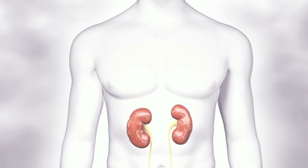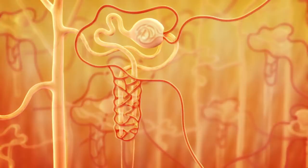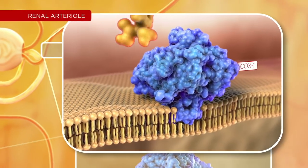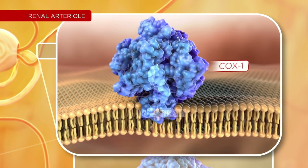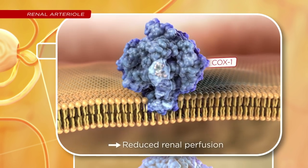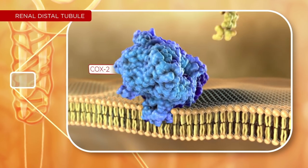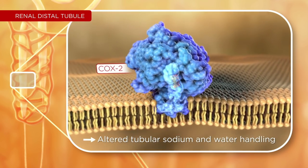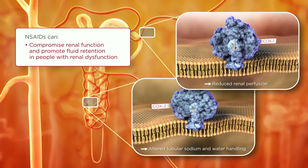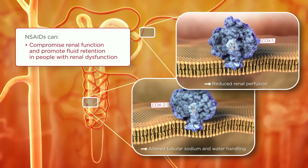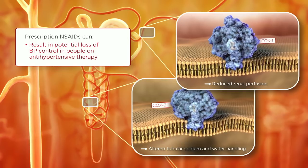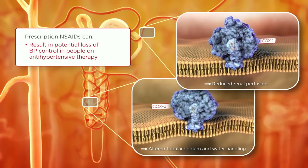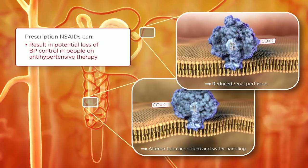Cyclooxygenase 1 and cyclooxygenase 2 play a role in renal function. NSAIDs can affect both COX-1 and COX-2 in the kidneys. In people with some compromise of renal blood flow, NSAID inhibition of COX-1 in afferent renal arterioles can result in reduced renal perfusion. In distal tubules, NSAID inhibition of COX-2 can result in altered tubular sodium and water handling. In people with some degree of renal dysfunction, these effects can potentially further compromise renal function and promote fluid retention. The renal effects of NSAIDs may be more pronounced at prescription doses. Use of prescription NSAIDs in people on antihypertensive therapy may result in undesirable blood pressure elevation and a potential loss of blood pressure control.